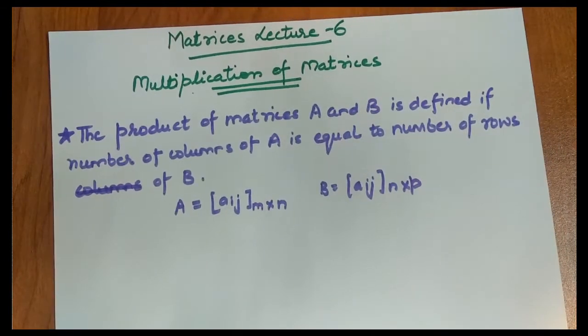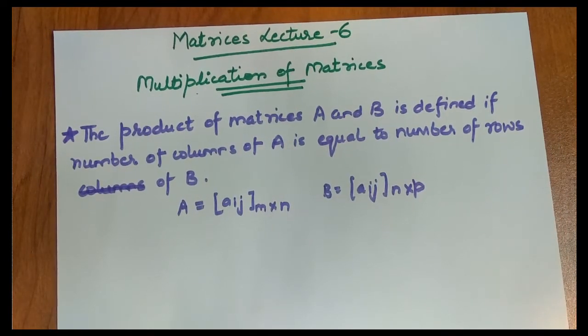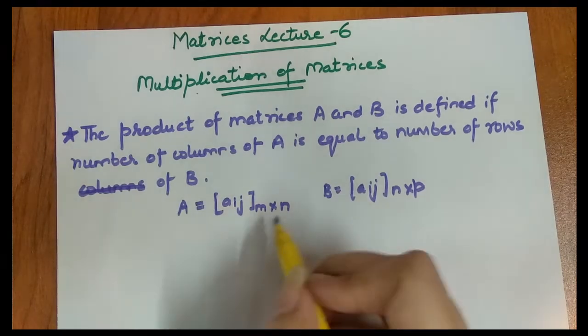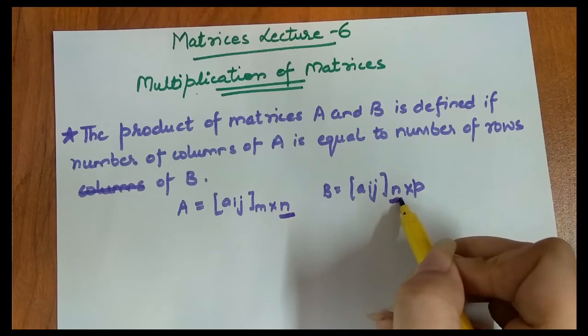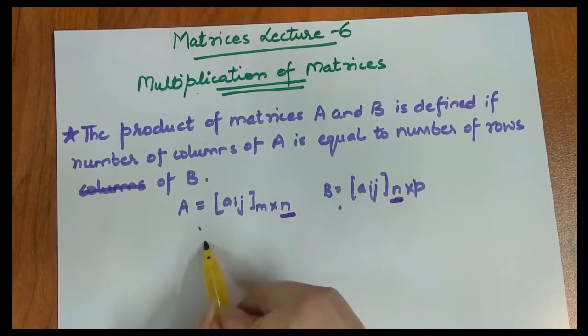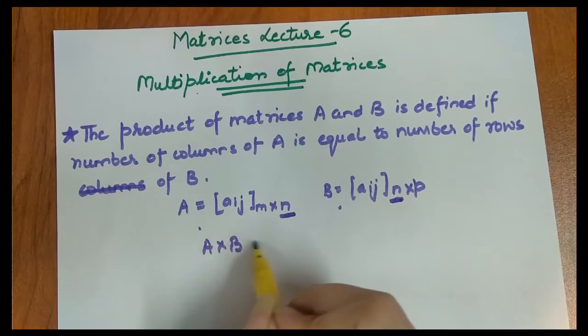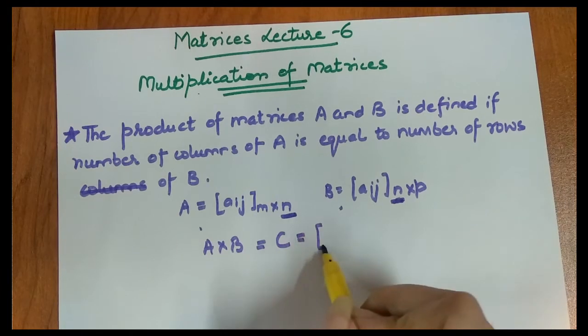In this case we have multiplication. As we have written in the definition, matrix multiplication is defined when number of columns of matrix A equals number of rows of matrix B. Then the product of matrix A and B will become matrix C.